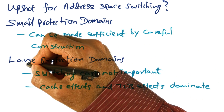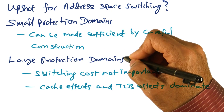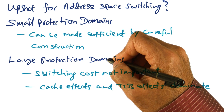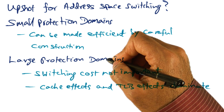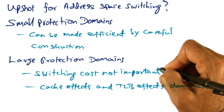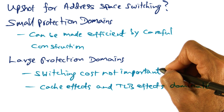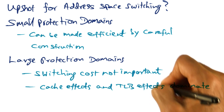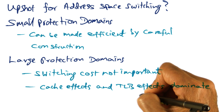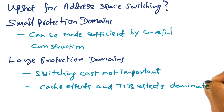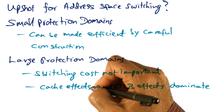On the other hand, if the switch is from one large protection domain to another large protection domain, the explicit cost of switching from one hardware address space to a different hardware address space is not that significant. The loss of locality — including TLB misses that occur when executing in the new large protection domain for translations, as well as cache effects — is far more costly.